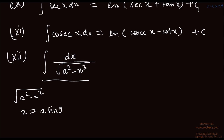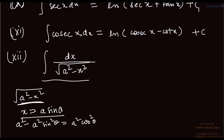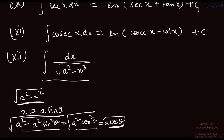By putting x = a sin θ inside the square root, you get a² minus a² sin²θ, which equals a² cos²θ, because 1 minus sin²θ is cos²θ. The root of that gives a cos θ. So you have gotten rid of the square root part and obtained a constant term: a cos θ.